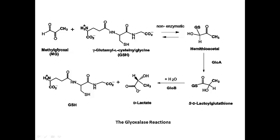Methylglyoxal, a three-carbon cellular metabolite, can be produced within cells through a number of different reactions, depending upon the type of cell.